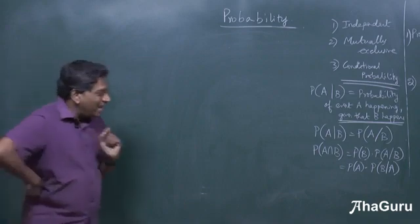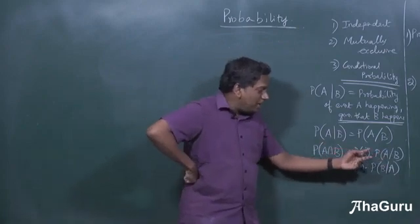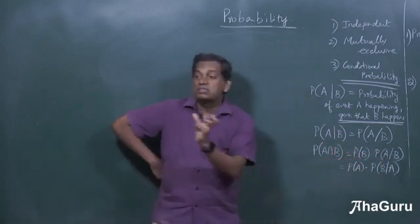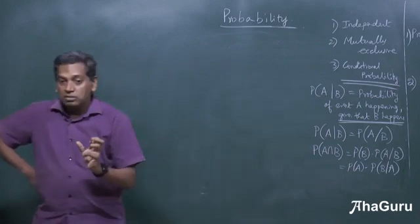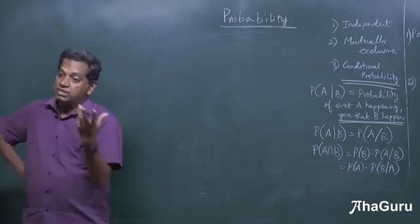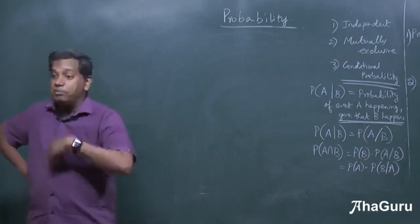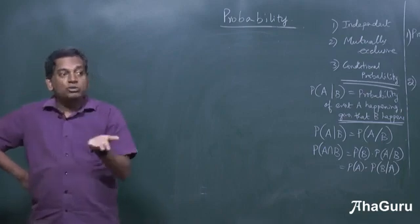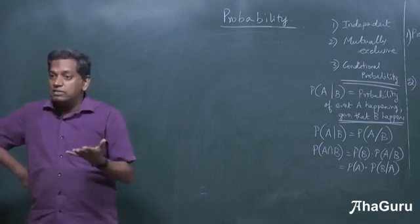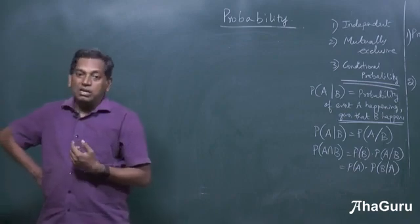So, the main idea I want to convey in conditional probability is, separately, P of A could be very small. But, P of A given B could be much larger. Or, it could also be the other way around. P of A given B could be smaller than P of A. Just like in mutually exclusive events. Suppose, I say, I want to pick two numbers. Whose sum is whatever, odd.